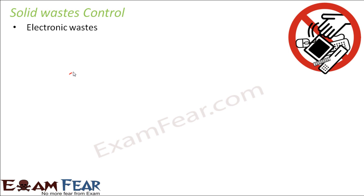Recycling of electronic wastes is done everywhere because each electronic good is made up of different parts. If we segregate the parts, each can be used for some other purpose. It has been observed that in most developed countries recycling of electronic waste is done by equipment, but in developing countries it is done manually.